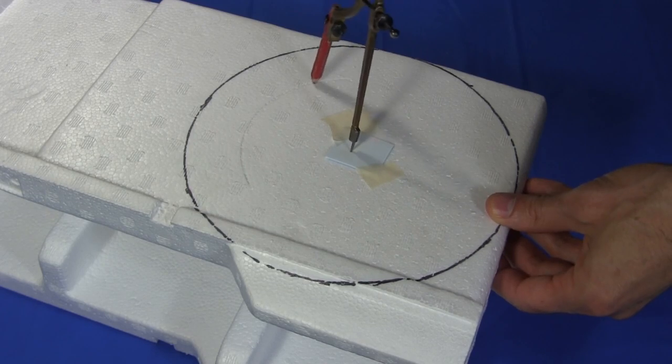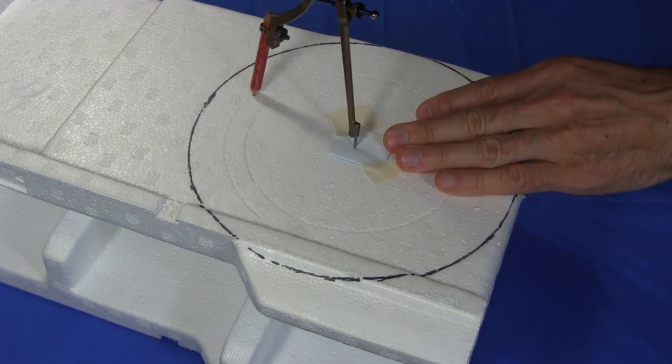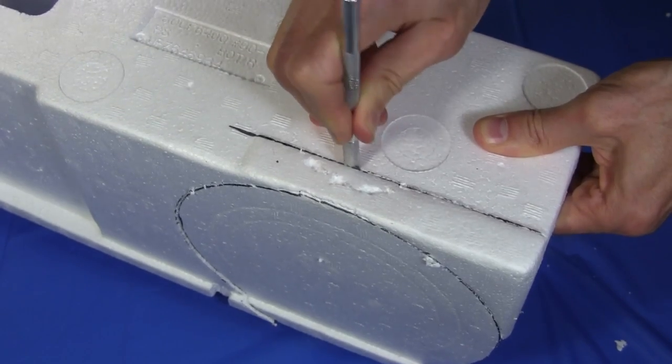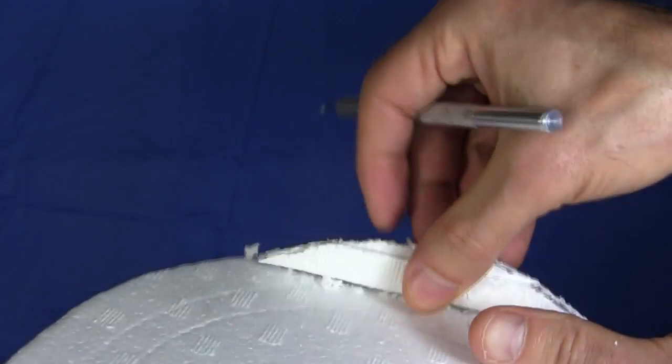Next I mark the hole that I'll cut all the way through. Then I mark another that'll be the bottom of the cone. Using an X-Acto knife blade, I carefully cut out the base. Then I trim off any extra pieces from the packaging.